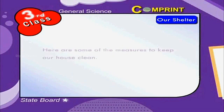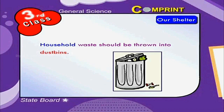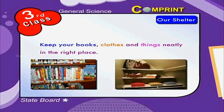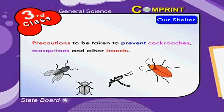Here are some measures to keep our house clean. Household waste should be thrown into dustbins. Keep your books, clothes, and things neatly in the right place. Dusting and mopping must be done daily. Precautions should be taken to prevent cockroaches, mosquitoes, and other insects.